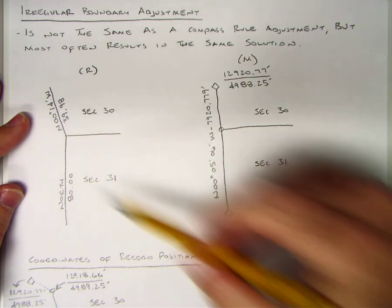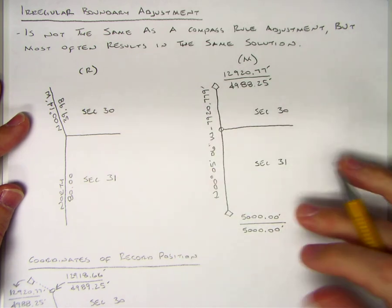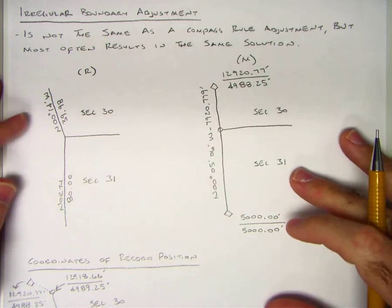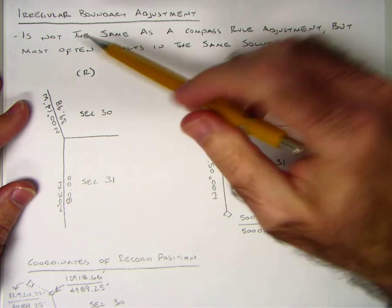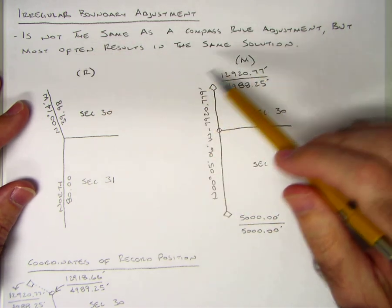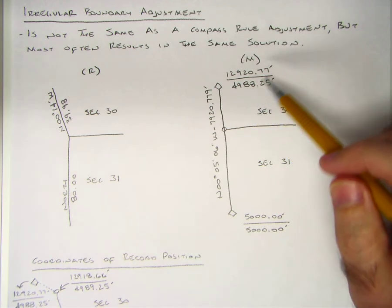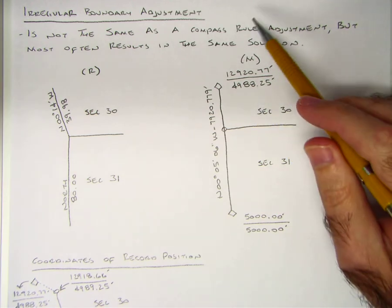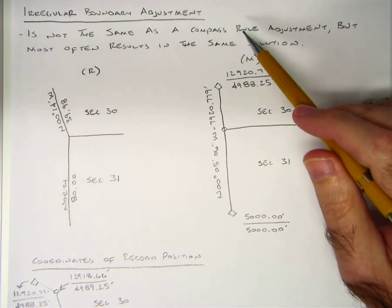One thing I do want to mention is that an irregular boundary adjustment is not the same as a compass rule adjustment but most often results in the same solution. Remember that our compass rule adjustment is known as the broken boundary or non-riparian line adjustment.